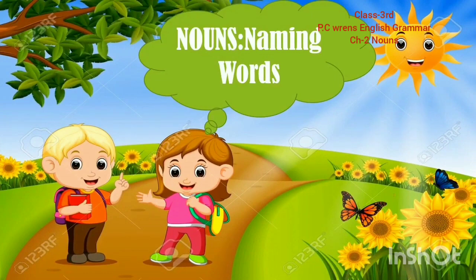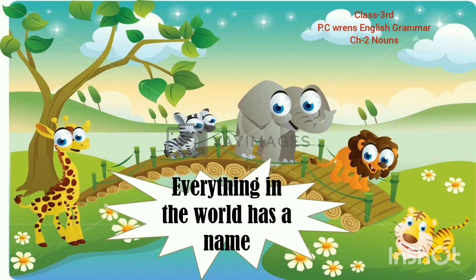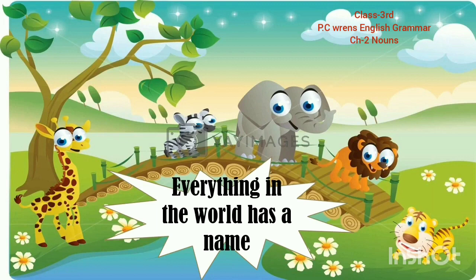Nouns, or naming words. Everything in the world has a name. Duniya mein har ek chiz ka naam hota hai. You must be sitting in your room — see around yourself and tell me anything which doesn't have a name. You will find nothing, because everything in the world has a name, and that is called naming words.